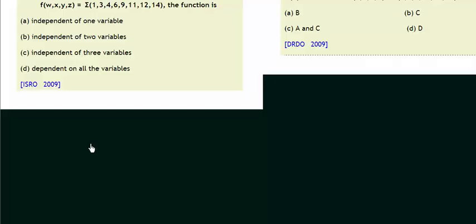So let's make our K-map. As you can see there are four variables, so a 16-cell K-map is required.